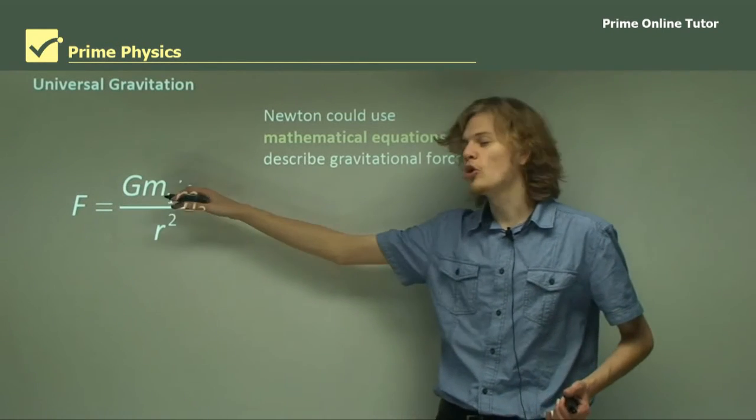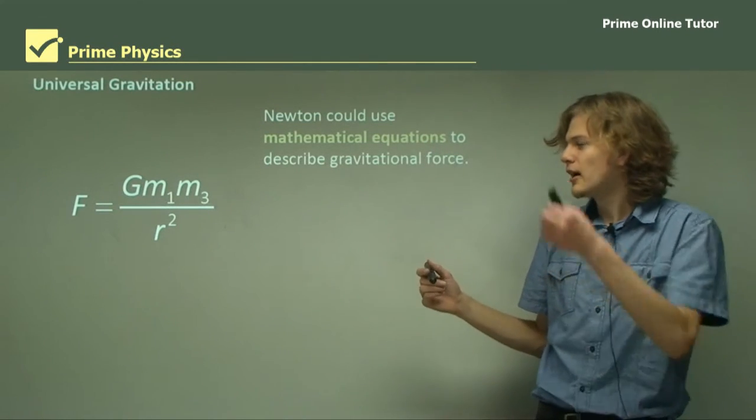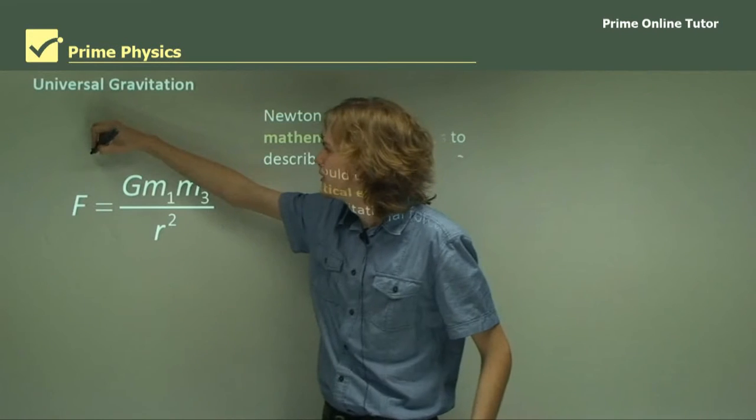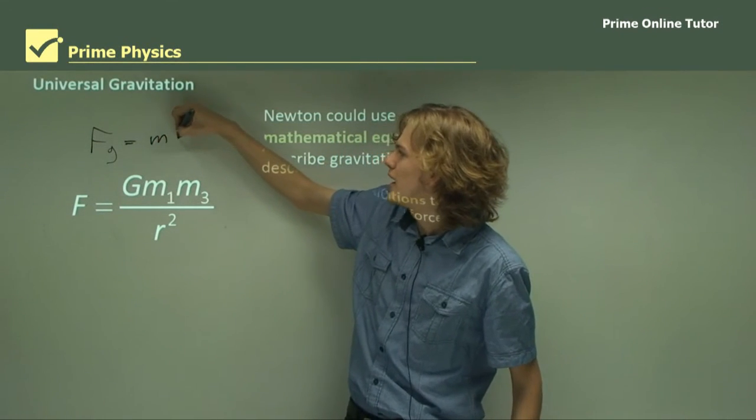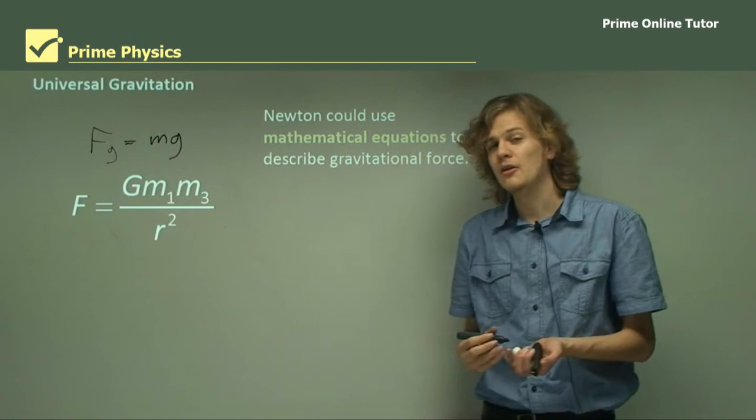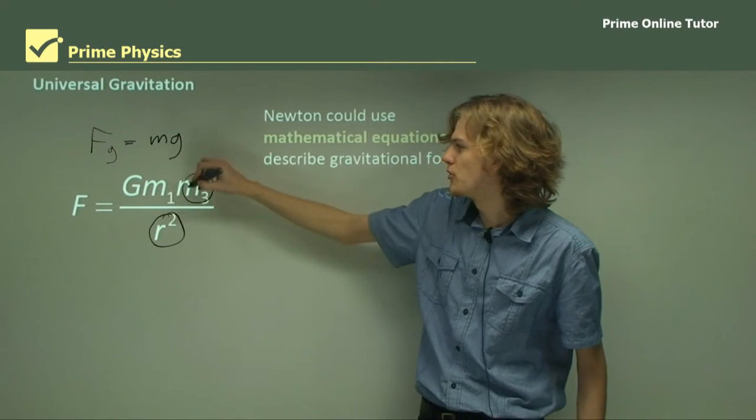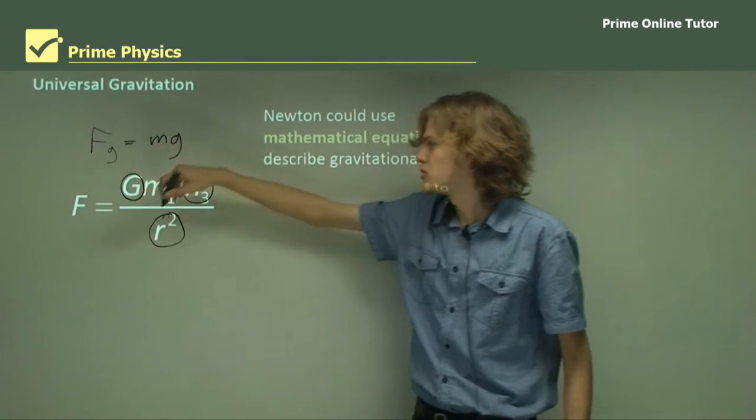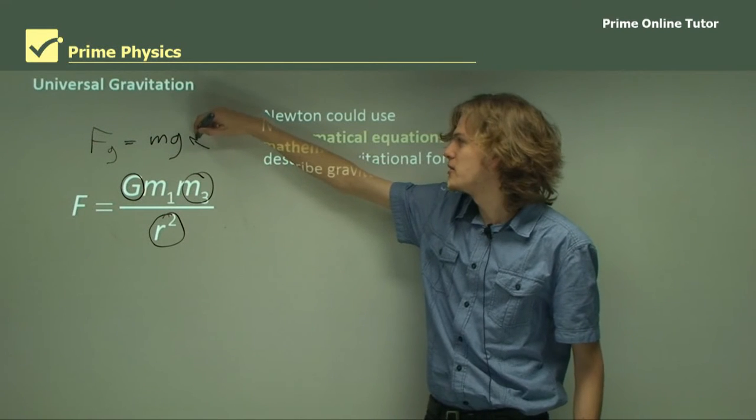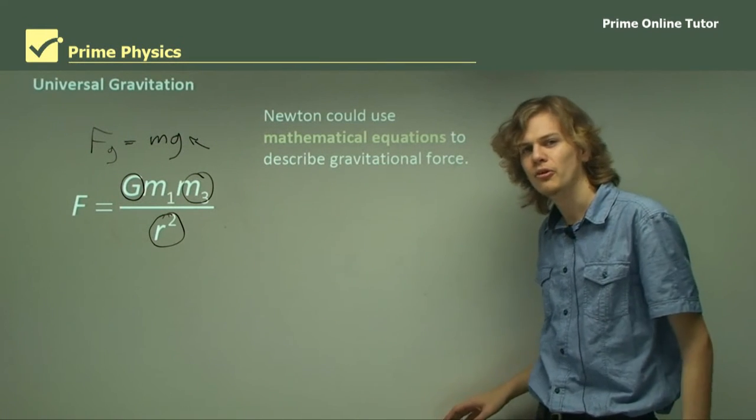Newton could use mathematical equations like this one to describe his gravitational force. Here we have the two masses of the different objects, a gravitational constant, and the radius between them squared. This shows us the force on any object in a gravitational field. We can see that the heavier the object is, the greater the force it'll experience. This is consistent with our earlier equation of the weight force of an object equals mg. At the surface of the Earth, R is a constant, the mass of the Earth is a constant, capital G is already a constant, so this whole thing just becomes the lowercase g in this equation.